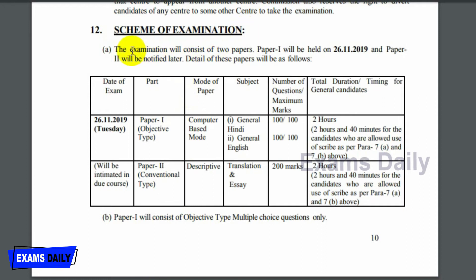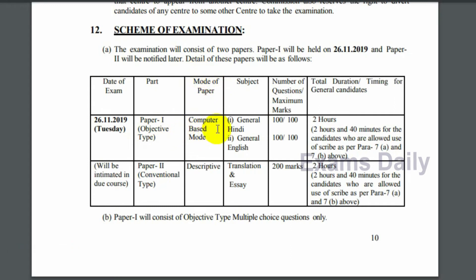The examination consists of two papers — Paper 1 and Paper 2. Paper 1 will be held on 26-11-2019. It is an objective type, computer-based exam covering General Hindi and General English, with 100 questions for 100 marks and a total duration of 2 hours.